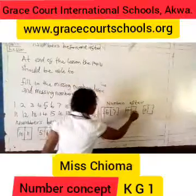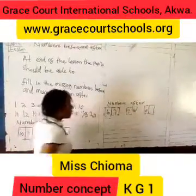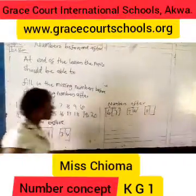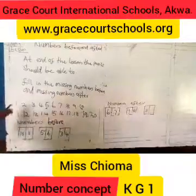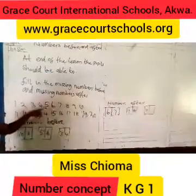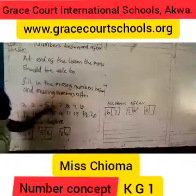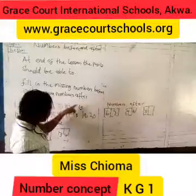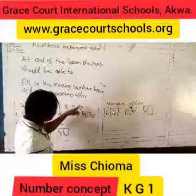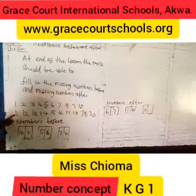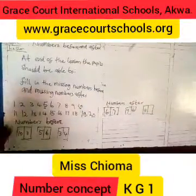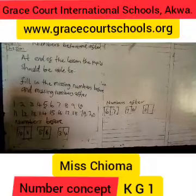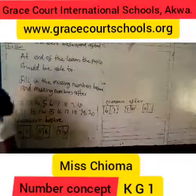10. This one is 11. So let's count it: 1, 2, 3, 4, 5, 6, 7, 8, 9, 10. That is 10. Then 11. So after 11 is 12.